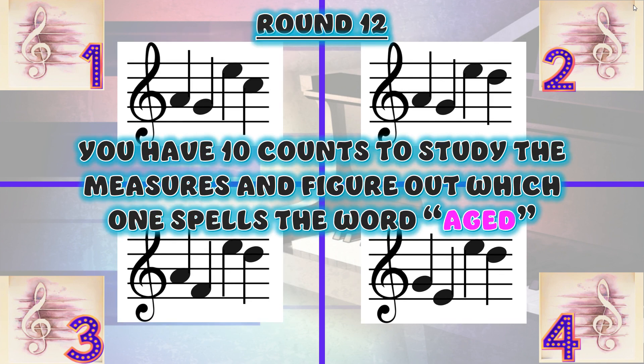Round 12. You have 10 counts to study the measures and figure out which one spells the word 'aged.'